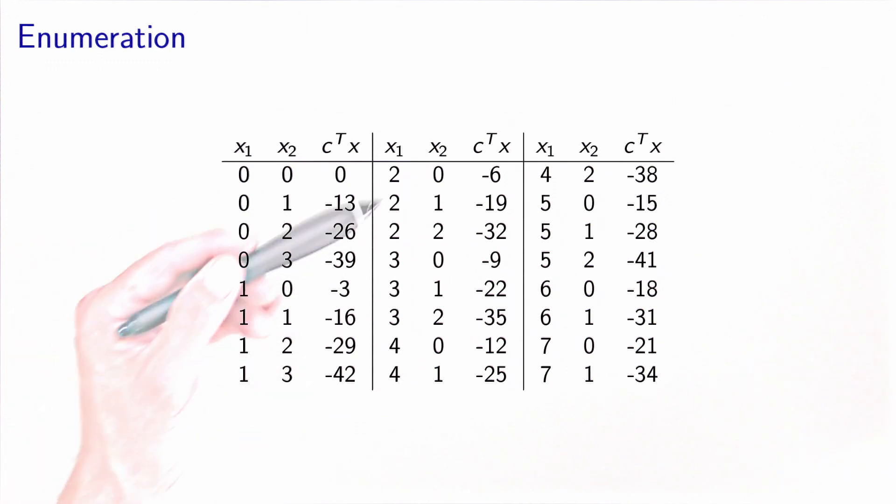Here I have enumerated the 24 points that are feasible, which means that verify the inequality constraints and are both integers, and for each I have calculated the objective function. The best one is this one, the minimal value is minus 42, and the optimal solution is x1 equals 1 and x2 equals 3.